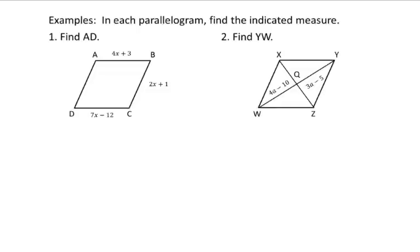Alright, looking at number one, the parts that we have labeled are sides. Two things should pop into your mind: opposite sides are congruent and opposite sides are parallel. In this case, parallel doesn't really help us, so we're focusing on opposite sides are congruent. I'm going to label my picture to show opposite sides are congruent. AB and DC are congruent and I have both those side measures, so I want to set those equal to each other: 7x minus 12 is equal to 4x plus 3.